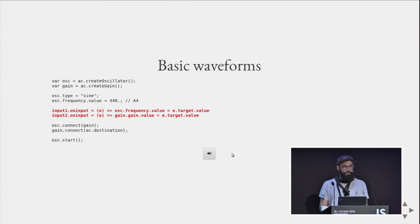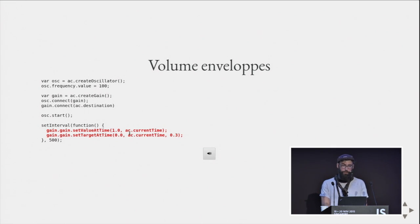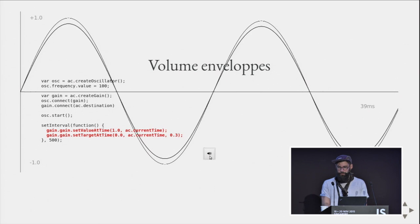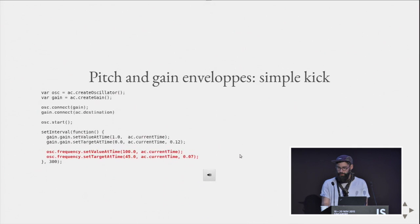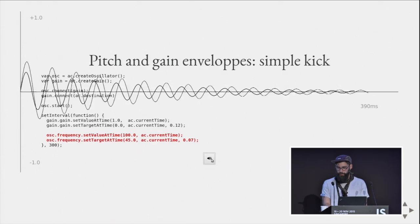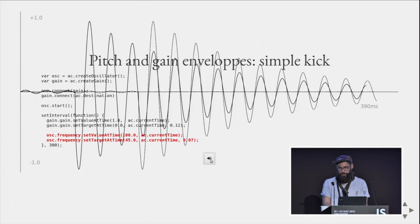It's pretty static, not very interesting. We can change things using audio param methods. For example, take a low sine wave at 100 Hz, set the gain value at time to 1.0, then set target at time to 0.0 — it will fade out. We can start to hear the start of a kick drum. If we also change the pitch at the same time, it starts getting more like a kick drum.